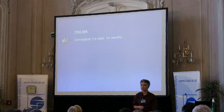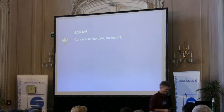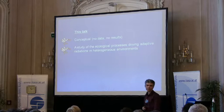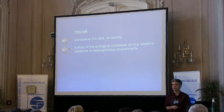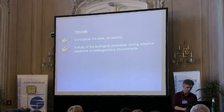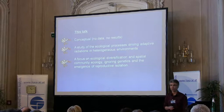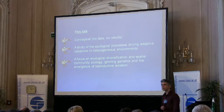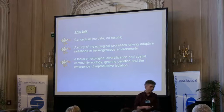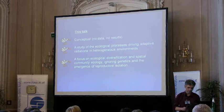What about this talk then? It will be a conceptual one — no data, no results, I'm sorry. There will be conclusions though. I will discuss the ecological processes driving adaptive radiations in heterogeneous environments, such as the adaptive radiation of Darwin finches, but there are of course many other examples. I will try to focus on ecological diversification and spatial community ecology, for the moment ignoring completely genetics and the emergence of reproductive isolation. After all, ecology and ecological diversification is somehow necessary for speciation, as we know it in most cases.